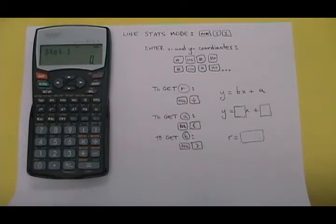Now I'm in the right mode. I have to enter the x and y coordinates of the points that I have on my graph. The first point I'm going to enter is x equals 4, y equals 11.